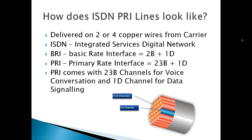ISDN stands for Integrated Service Digital Network. We have two different flavors: the BRI and PRI. The BRI is the smaller brother — it only gives you two simultaneous calls versus the PRI, the Primary Rate Interface, where you get 23 voice channels and one D channel, which is used for signaling.